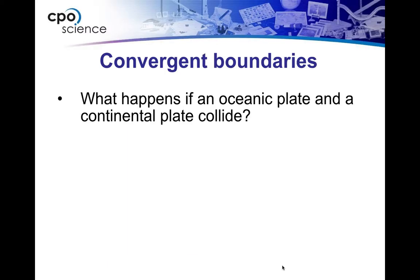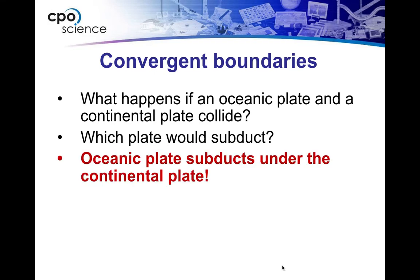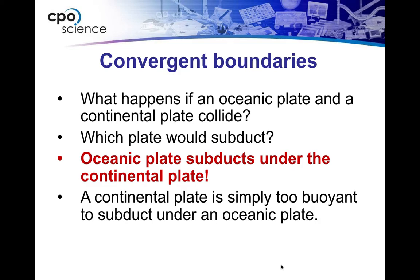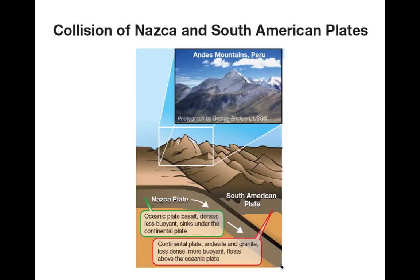What happens if an oceanic plate and a continental plate collide? They have different densities — oceanic plates are more dense than continental plates. So because oceanic plates are more dense, they are pushed under the continental plate, all because of density. Here's a picture showing the Andes Mountains in Peru — the oceanic Nazca plate gets pushed underneath the South American continental plate, and it pushes up higher.